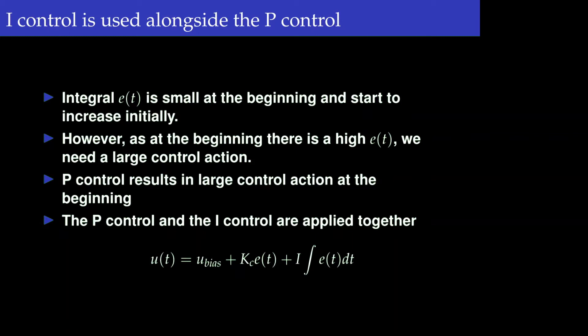At the beginning when the error is high, we need a large control action. For example, when moving from a connecting road to a highway where the speed limit changes from 50 to 100, initially you need a very large push on the gas pedal — that large initial control action can be obtained through proportional control. That's why we do not use integral control by itself; rather we use integral control along with the proportional control, giving rise to what is called PI control.